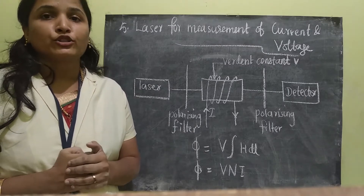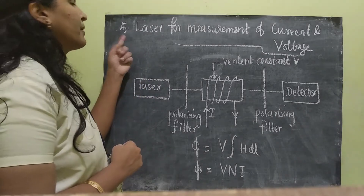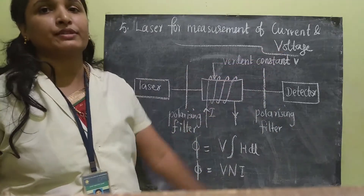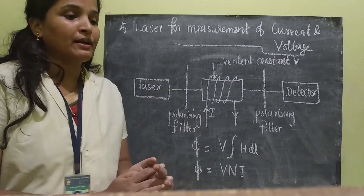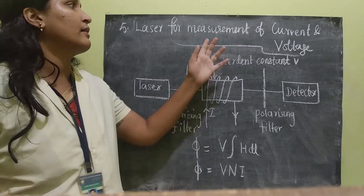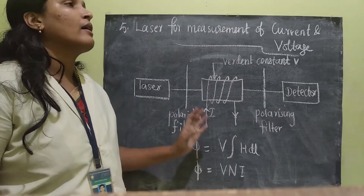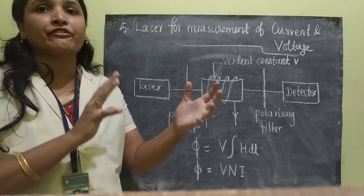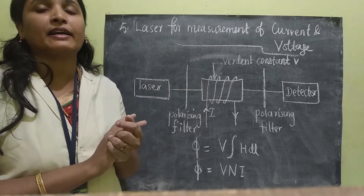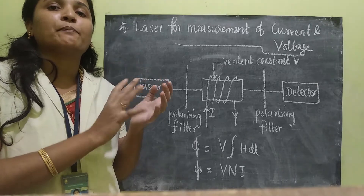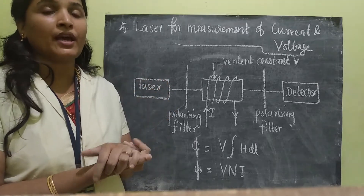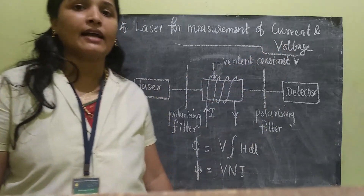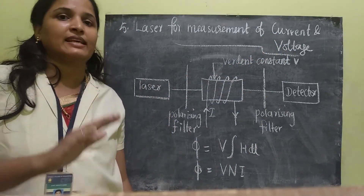Good morning students. Today I am going to teach you the fifth topic of unit 4, which is laser for measurement of current and voltage. The principle behind this measurement is basically when a polarized light is given to a high intensity magnetic field, the laser light will be polarized. The angle of polarization will be proportional to the current and voltage in it. This is the basic principle.